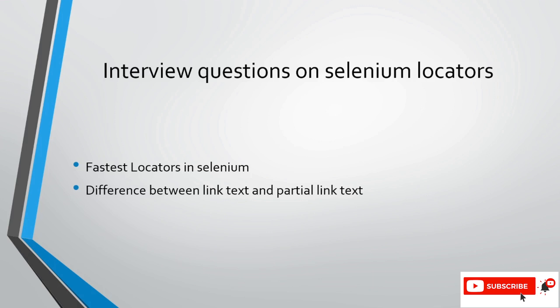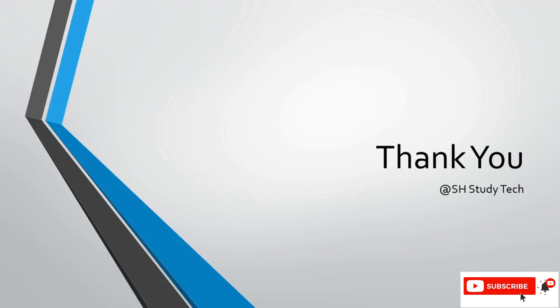After ID, the next fastest locators are CSS, then Class Name, and then XPath. Another interview question is the difference between Link Text and Partial Link Text. Link Text gives an exact match of a link, while Partial Link Text gives an approximate or partially matched link. In upcoming videos we'll see each locator in depth.